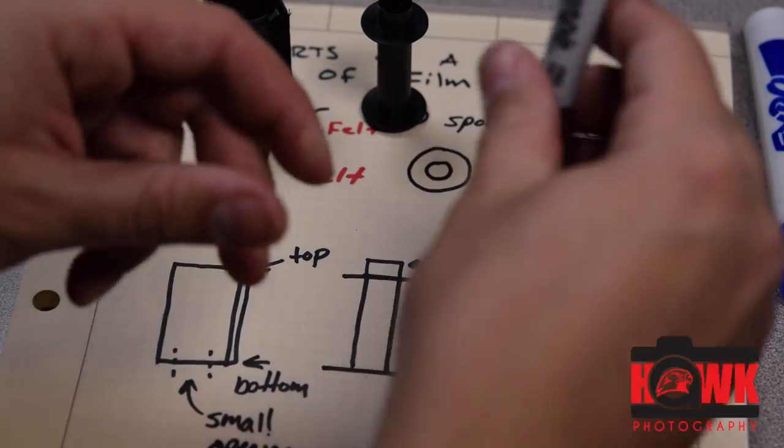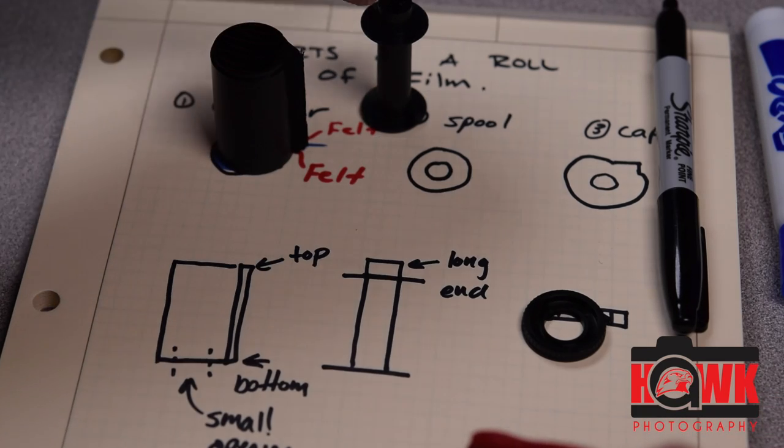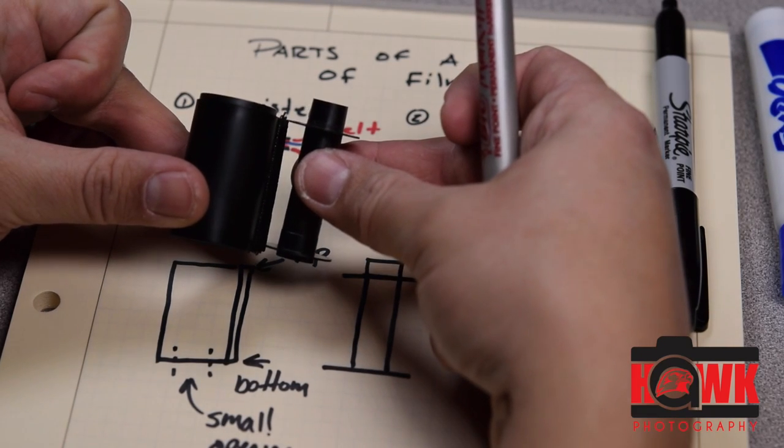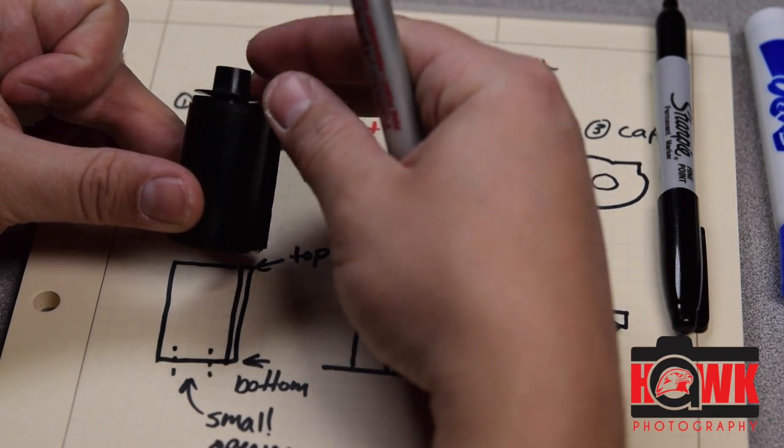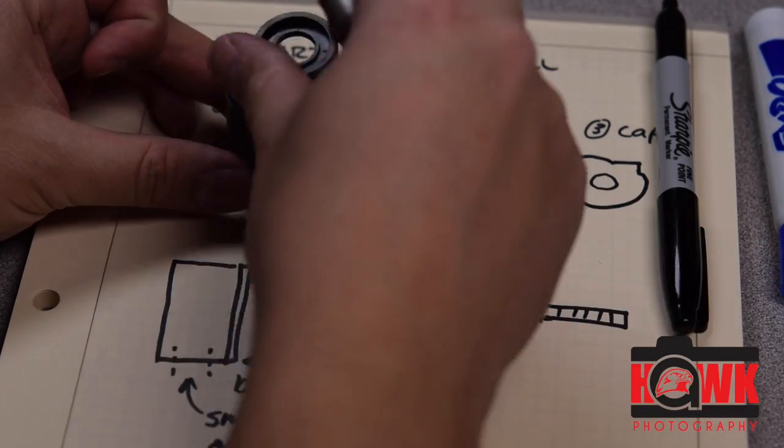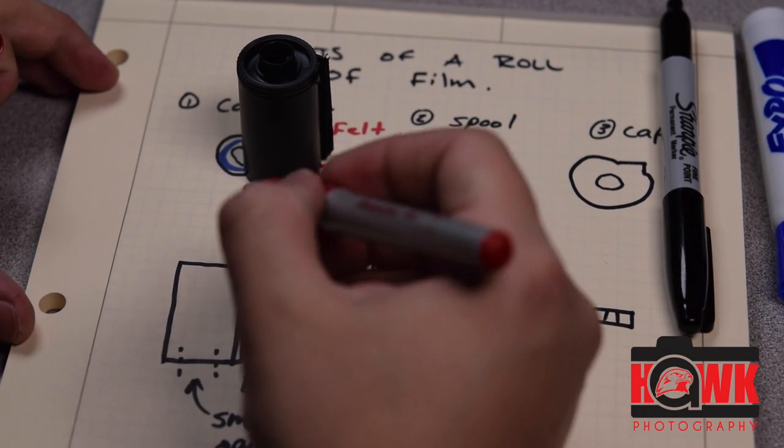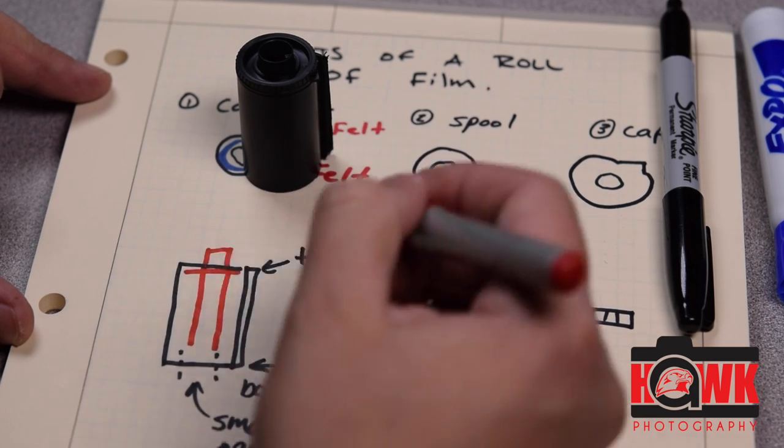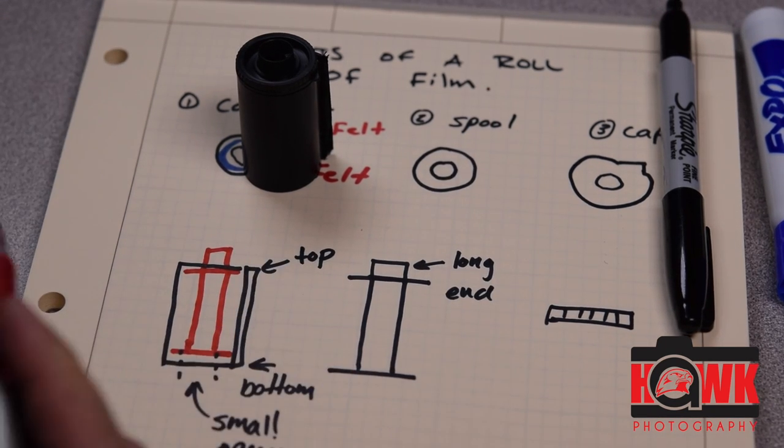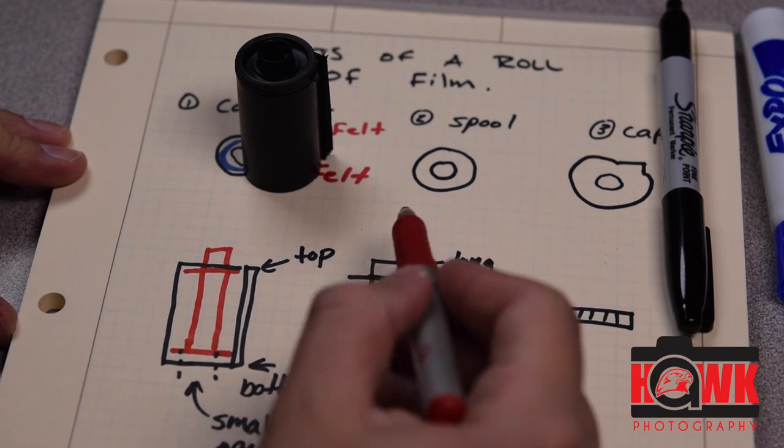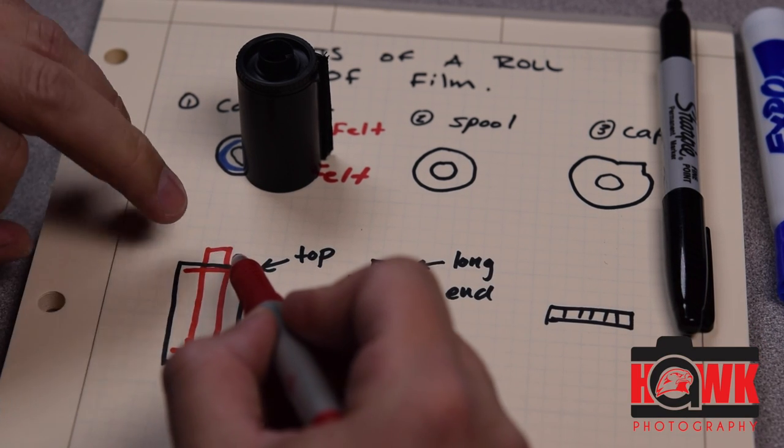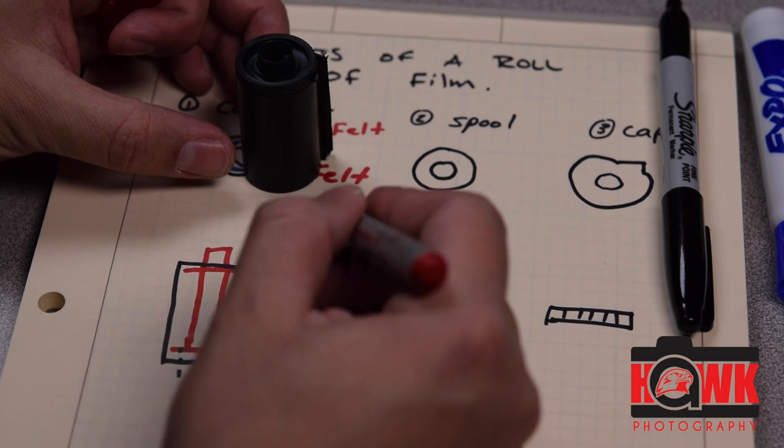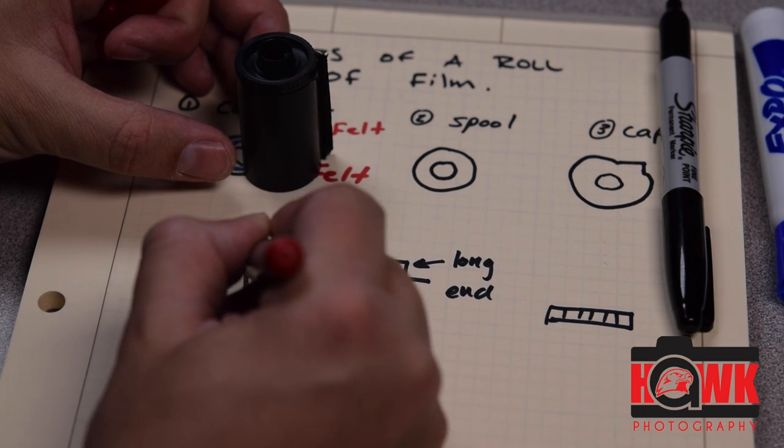When this thing is assembled correctly, the spool drops into the top of the film canister in that fashion right there. And the cap will be installed on top of that. I'm going to go ahead and draw this in. So you can see that the long end of the spool faces the top of the canister. And then the cap is installed right there.